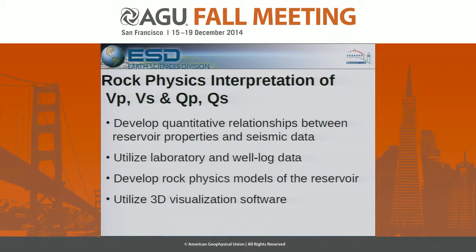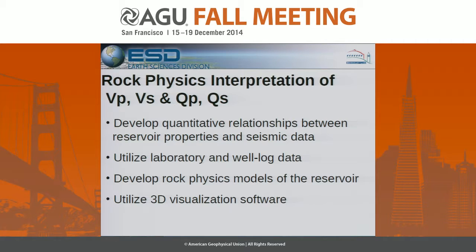What we're trying to do in our interpretation of reservoir properties — based on micro-earthquake data — is develop quantitative relationships between reservoir properties and seismic data. Our data are at the surface, and our properties that we're trying to resolve are maybe three kilometers deep. We're looking at rock physics relationships from laboratory studies and field log data, and relating that to what we observe at the surface in micro-earthquake recordings, to develop models describing the state of fractures, fluids, and permeable zones.